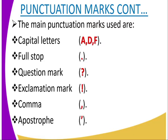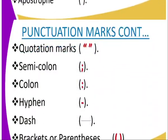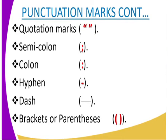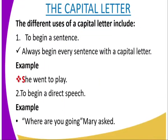We can see the different types of punctuation marks in written work: capital letters, full stop, question mark, exclamation mark, comma, apostrophe, quotation mark, semicolon, colon, hyphen, dash, and bracket or parenthesis. Those are the types of punctuation marks used in written work.